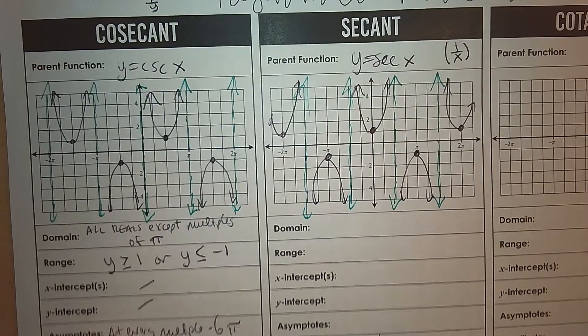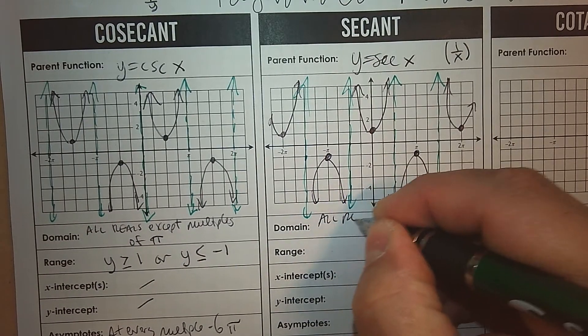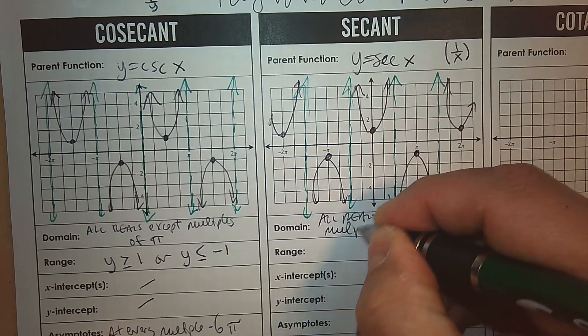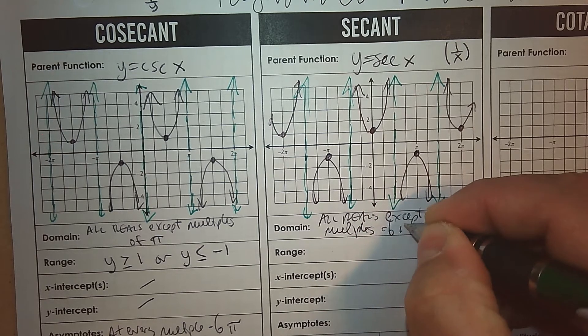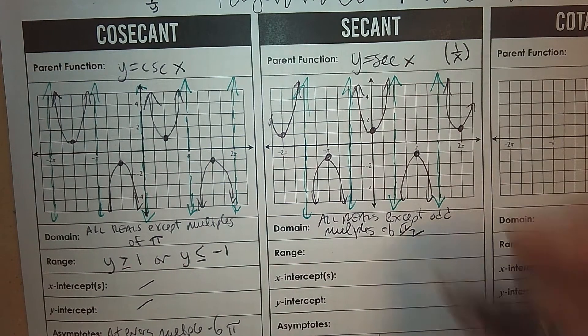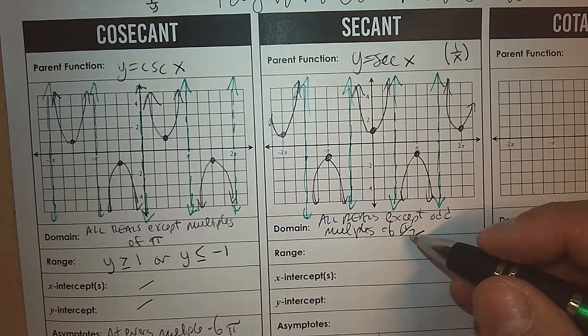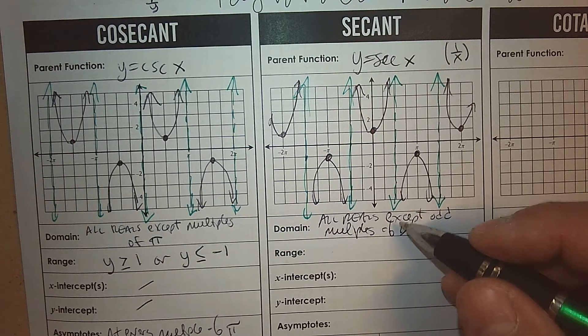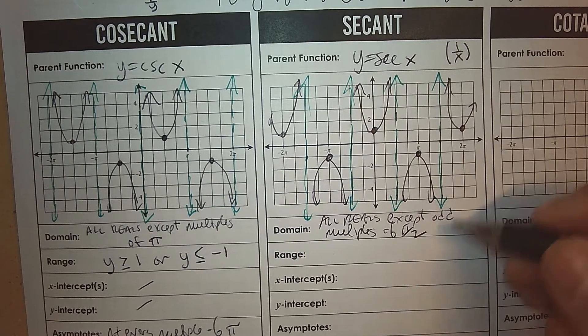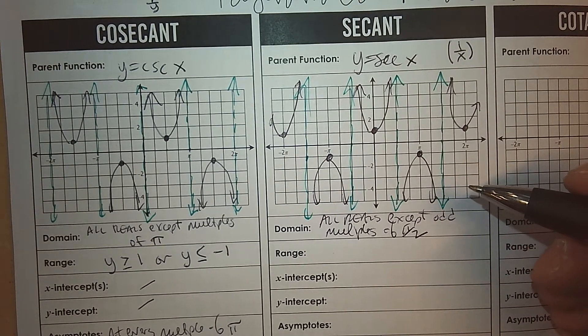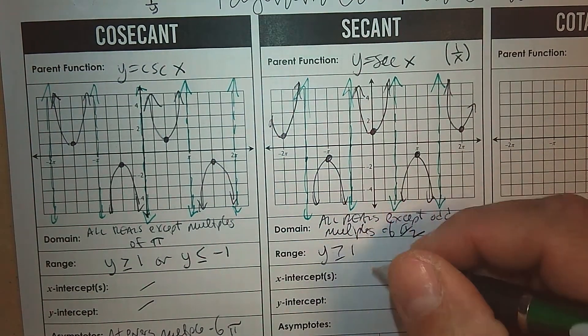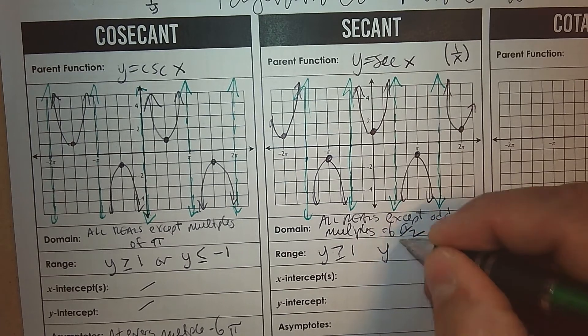The domain again. So this is all reals except odd multiples of pi over 2. Even multiples would be 2 over 2 or 4 over 2. Those simplify down, and they wouldn't be part of the domain restriction. So just odd multiples. So 1 over 2, 3 over 2, 5 over 2, just the odd numbers in the numerator. The range. Same as what we just did. So it's either greater than or equal to 1. It's less than or equal to negative 1.